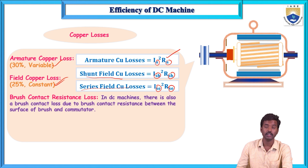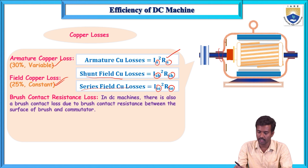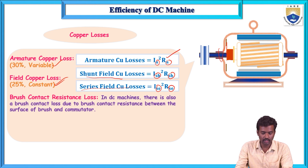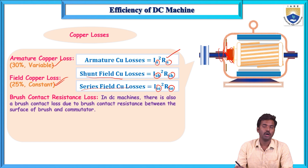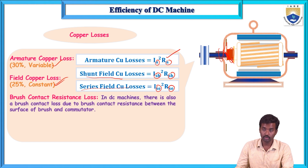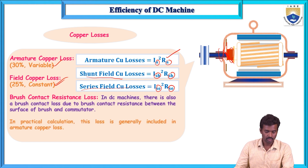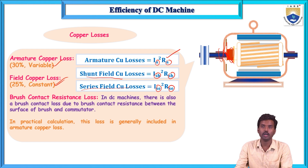Another category is brush contact resistance drop. This loss occurs due to the brush contact resistance between the commutator surface and the brush. There may be a voltage drop across this resistance, which is categorized under copper loss. In practical calculations, this loss is generally included in the armature copper loss.